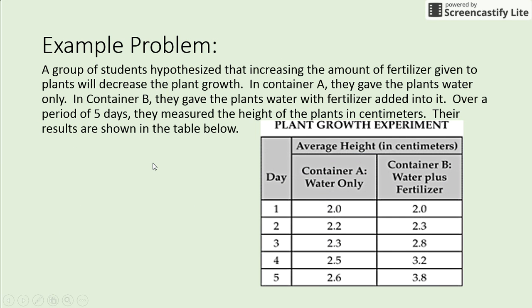Once you can break down those parts of the experiment, you can compare our two groups to see if our hypothesis was correct. We have an example problem in the packet to walk through and create an exemplar for conclusion writing. A group of students hypothesized that increasing the amount of fertilizer given to plants will decrease the plant growth. In container A, they gave the plants water only; in container B, they gave the plants water with fertilizer added. Over five days, they measured the height of the plants in centimeters.